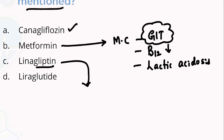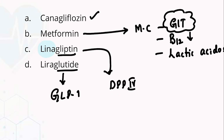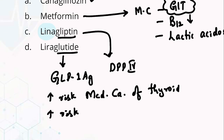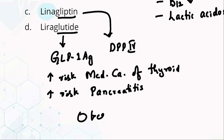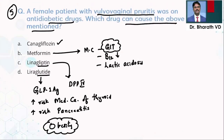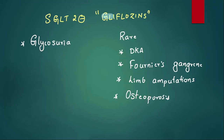Drugs ending in '-gliptin' are DPP-4 inhibitors with few adverse effects — mainly mild nasopharyngitis. Linagliptin is safest in renal failure with no dose reduction required. Drugs ending in '-glutide' like liraglutide and semaglutide are GLP-1 agonists — they can increase the risk of medullary carcinoma of the thyroid and pancreatitis. Tell me in the comments which anti-diabetic drugs are also approved for managing obesity.